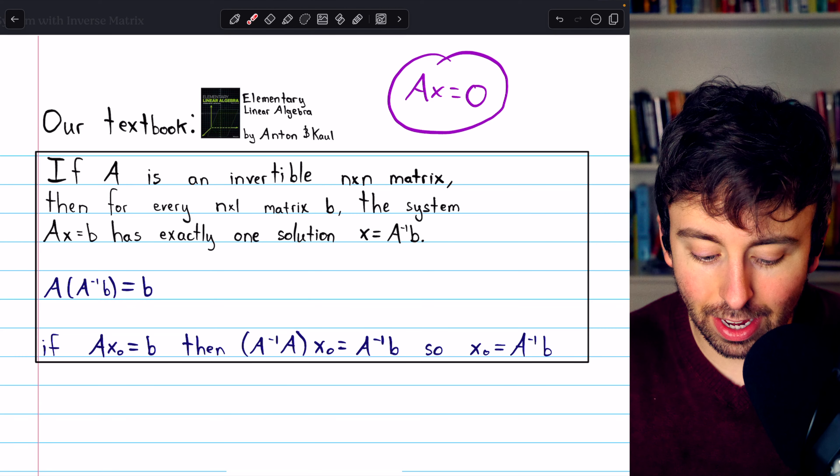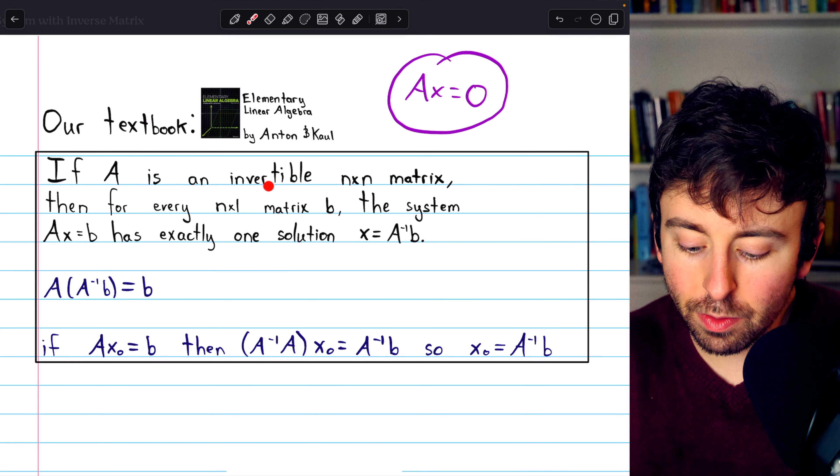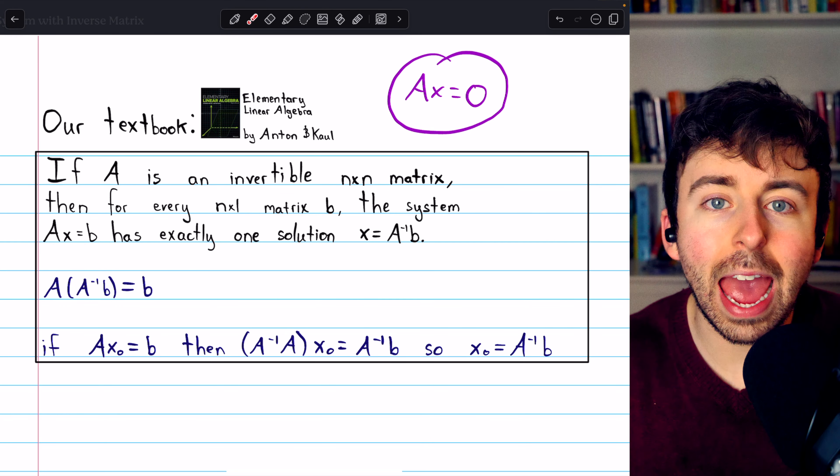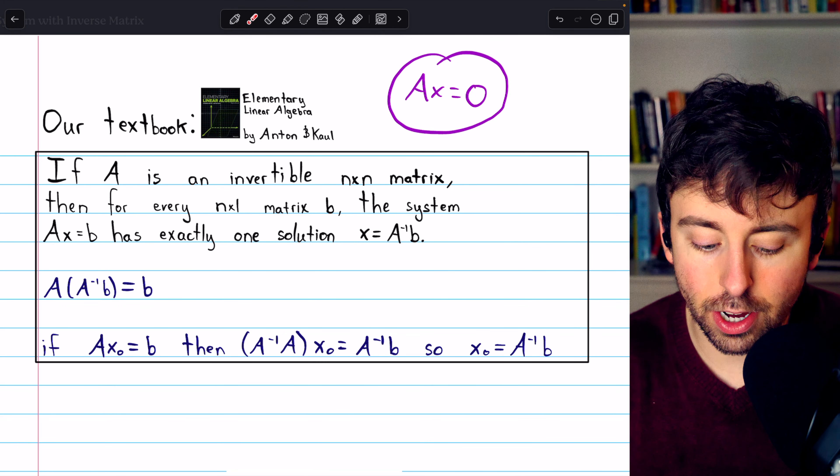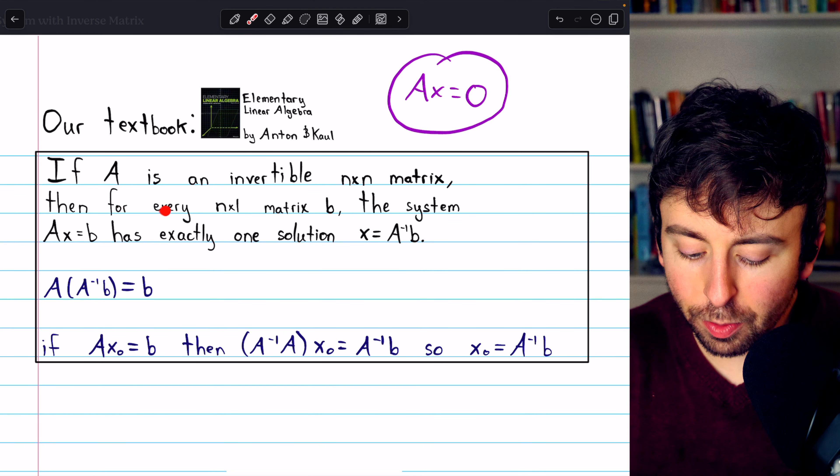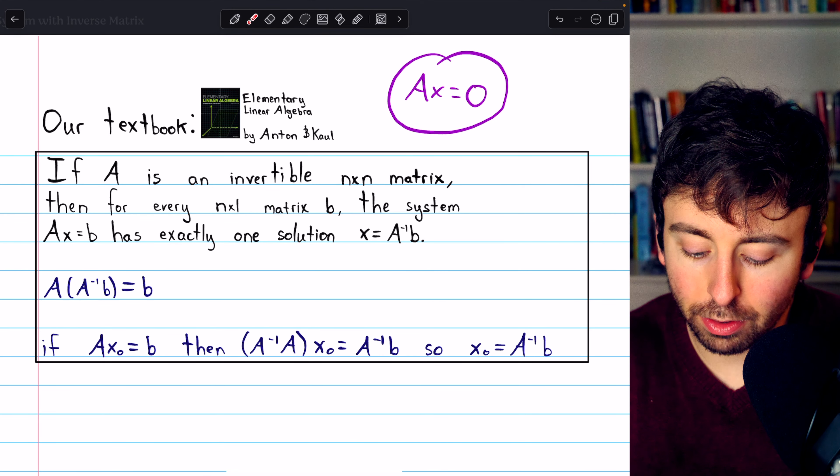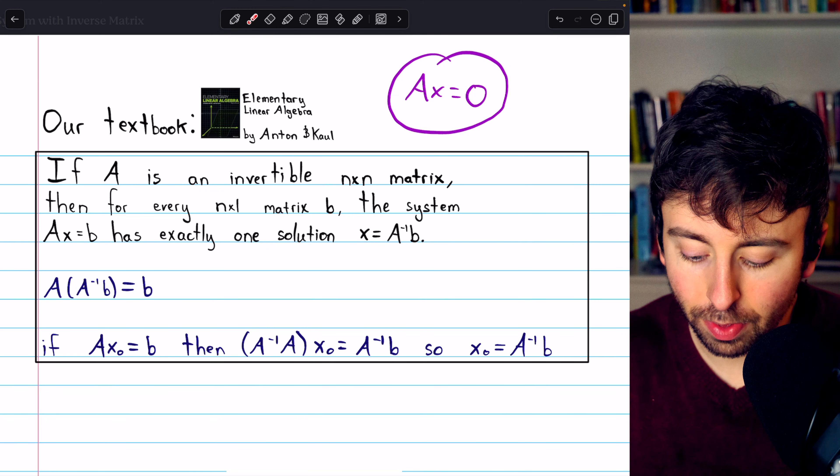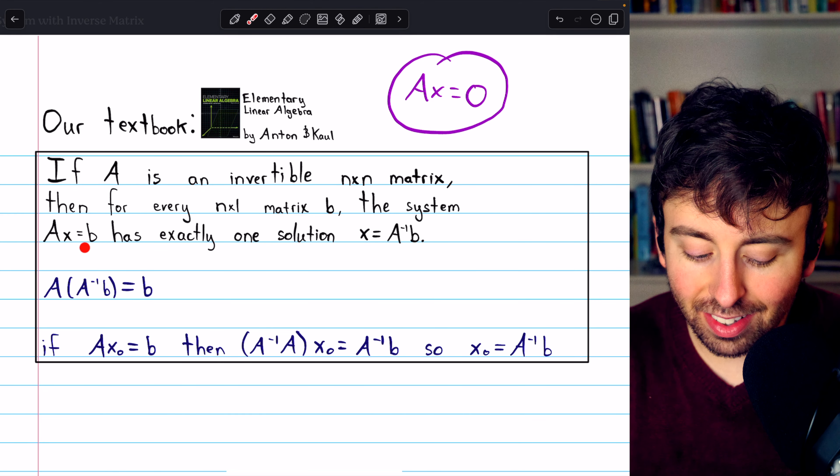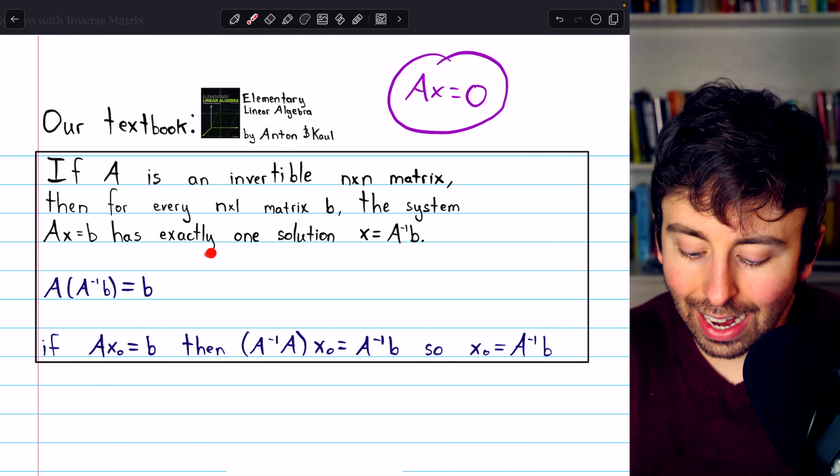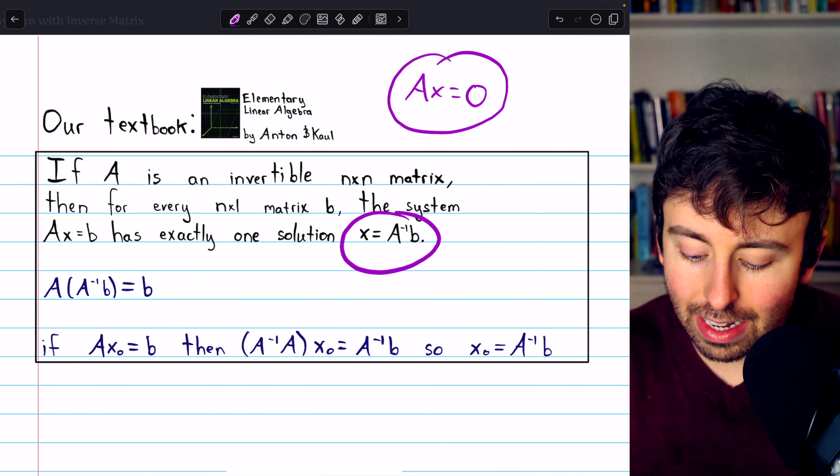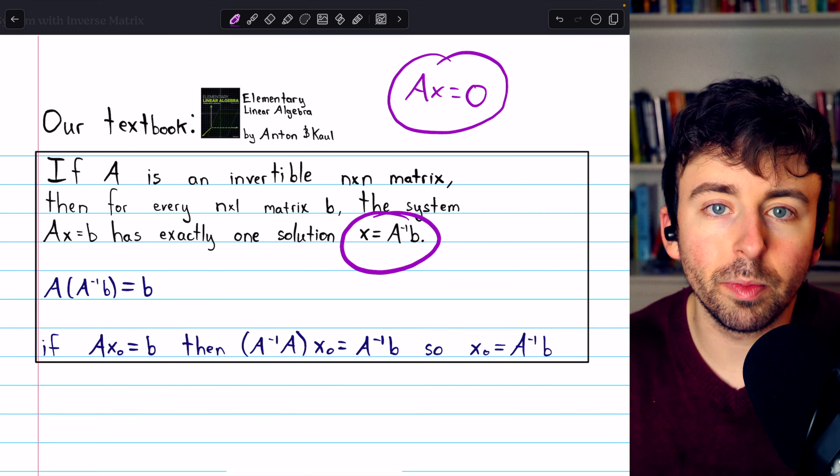And it's really easy. If A is an invertible n-by-n matrix, which means we're going to have n equations and n unknowns, then for every n-by-one matrix B, that would just be a column vector with n rows, the system Ax equals B has exactly one solution. And that solution is A inverse times the column vector B.